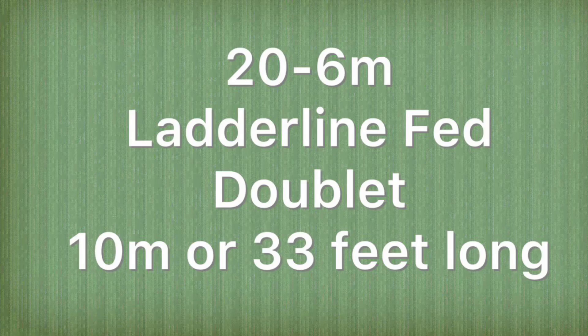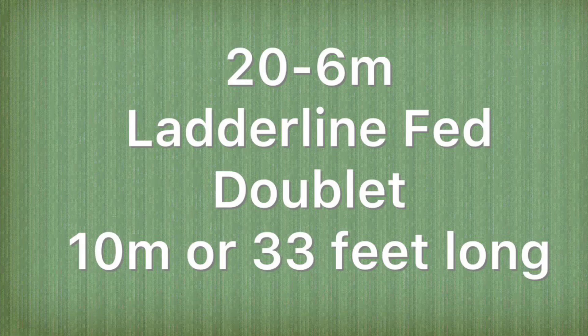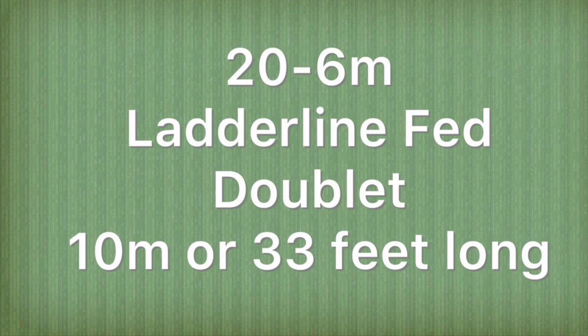Hi folks, so the antenna we're looking at today is the 33 foot long or 10 meter long ladder line fed doublet which should cover 20 meters through to 6 meters. So let's have a look then at what this antenna is all about.